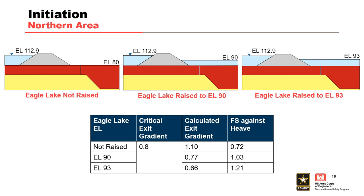This was an expected result, aligning with the observed poor performance during past flood events. Factors of safety with Eagle Lake elevations of 90 feet and 93 feet were both calculated to be greater than 1.0. However, it was noted that achieving a lake elevation of 93 feet was more desirable, as the factor of safety with a lake elevation of 90 feet was only 1.03. In May 2011, it became apparent that the maximum achievable water elevation in Eagle Lake would be no greater than elevation 90, making a raise of Eagle Lake alone questionably sufficient. It was therefore determined that construction of the emergency berm was also necessary.